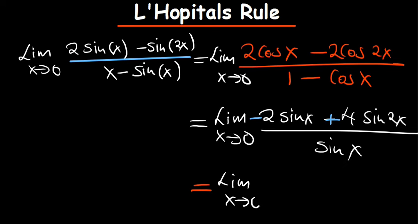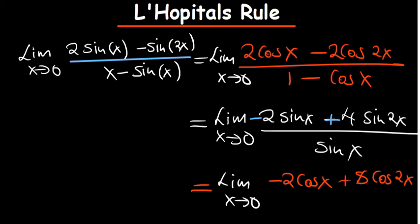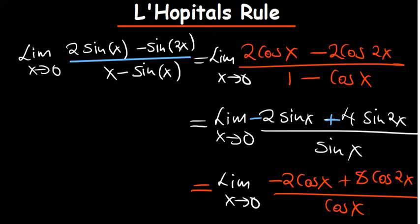Taking the limit as x approaches zero again: the derivative of sine is cosine, so we get negative cosine of x. The derivative of sine of 2x is positive cosine of 2x, and two multiplied by the four gives eight, so we have plus eight cosine of 2x. On the bottom, the derivative of sine of x is cosine of x.